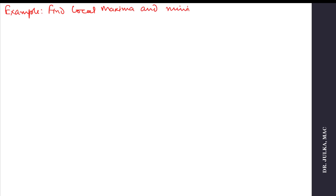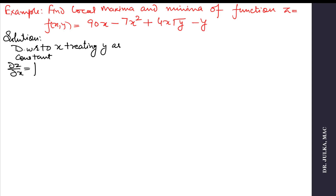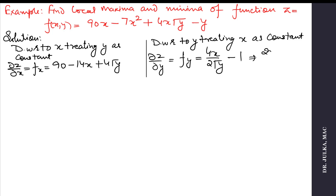Next example: Find local maxima and minima of the function z = 90x - 7x² + 4x√y - y. First, we differentiate with respect to x treating y as a constant, and we get: del z / del x = 90 - 14x + 4√y. Again differentiate with respect to y treating x as a constant, and we get: del z / del y = 4x / (2√y) - 1 = 2x / √y - 1. Now put the first derivative equal to 0 to find critical points.